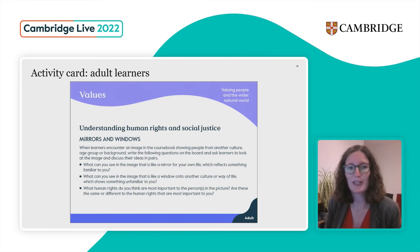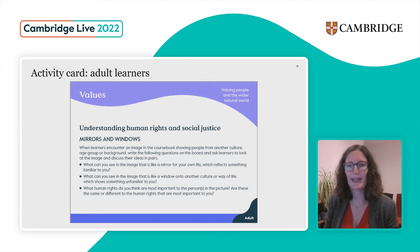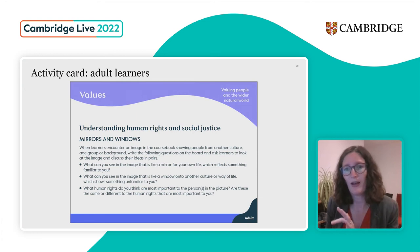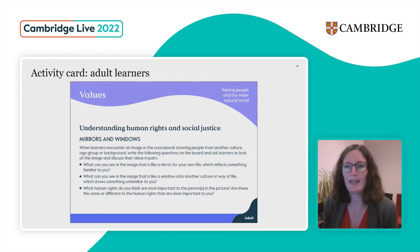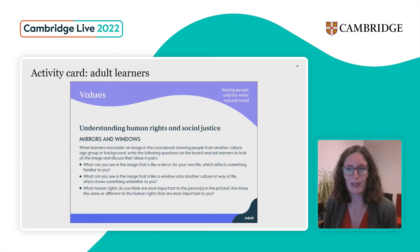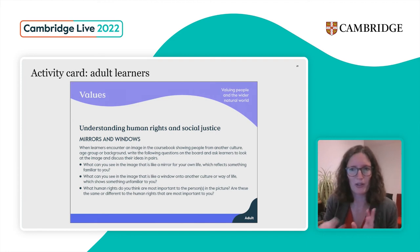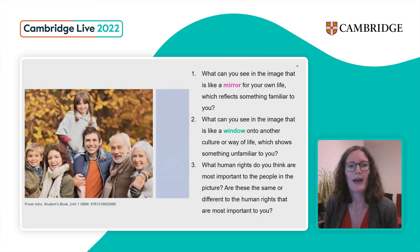The task here is: when learners encounter an image in the course book showing people from another culture, age group, or background, write the following questions on the board and ask learners to look at the image and discuss their ideas. This is a really flexible activity because there are many images in course books you could use to start examining the similarities and differences between us and those people. Here's an example: I've taken an image from Prism, their student's book, Unit One.